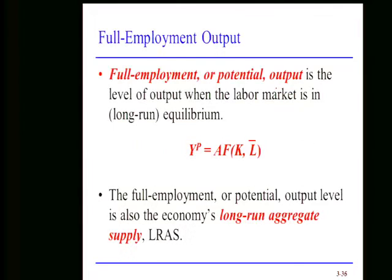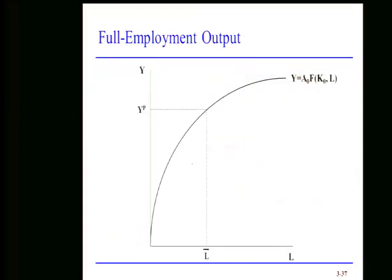We also need to think about full employment or potential output. When the labor market is in equilibrium at L-bar, the level of output generated is referred to as full employment output or potential output. When the labor market is in long-run equilibrium, we do not mean that everybody has a job — there will always be some unemployment. Some people are changing jobs, some quit without a new job lined up, new graduates take time to find work. In the United States, we estimate that to be around 5.5% to 6% of the labor force.